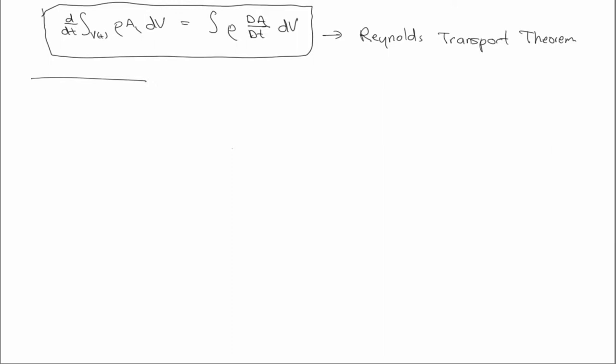So basically what we're going to write or derive is just the graduate school version of F equals MA. It's a continuum mechanics version of F equals MA.